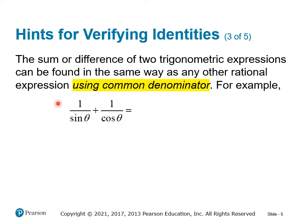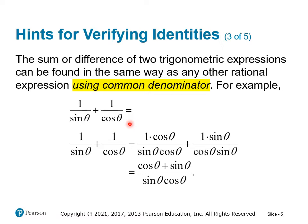So you'd change the first fraction, one over sine, to the common denominator by multiplying top and bottom by the missing factor cosine — that's cosine over cosine. For the second fraction, multiply by sine over sine, since that's the missing factor. Since we're multiplying by a factor of one, we're not changing the value. This gives us the combined fraction with the common denominator sine theta cosine theta.